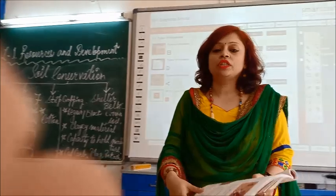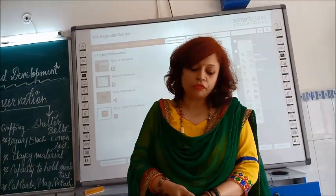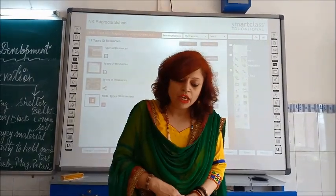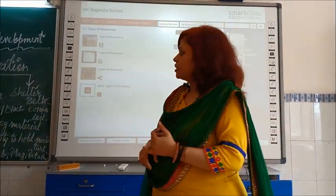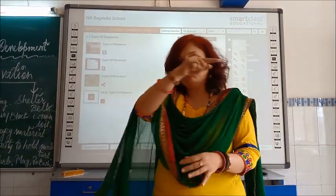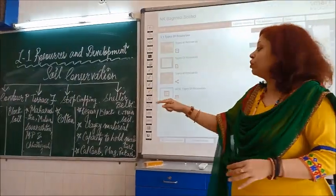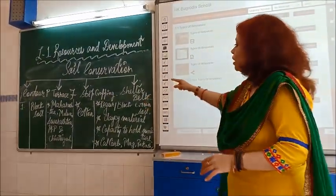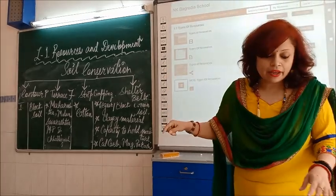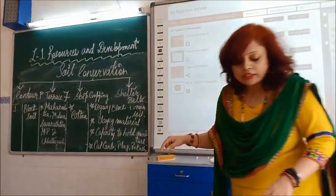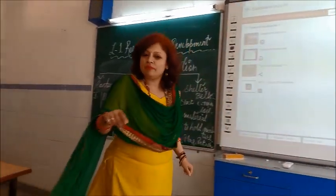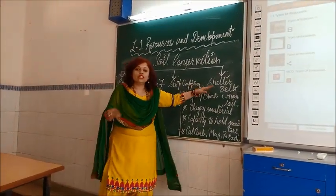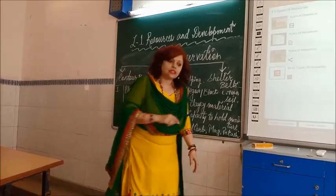These four methods of soil conservation are very important for exam purposes. They are given on page number 11 in the last paragraph. Contour plowing is plowing along contour lines of hills; terrace farming is found in hilly areas; strip cropping involves growing strips of grass in between crops to regulate water flow; and planting shelter belts involves planting trees to check wind erosion.